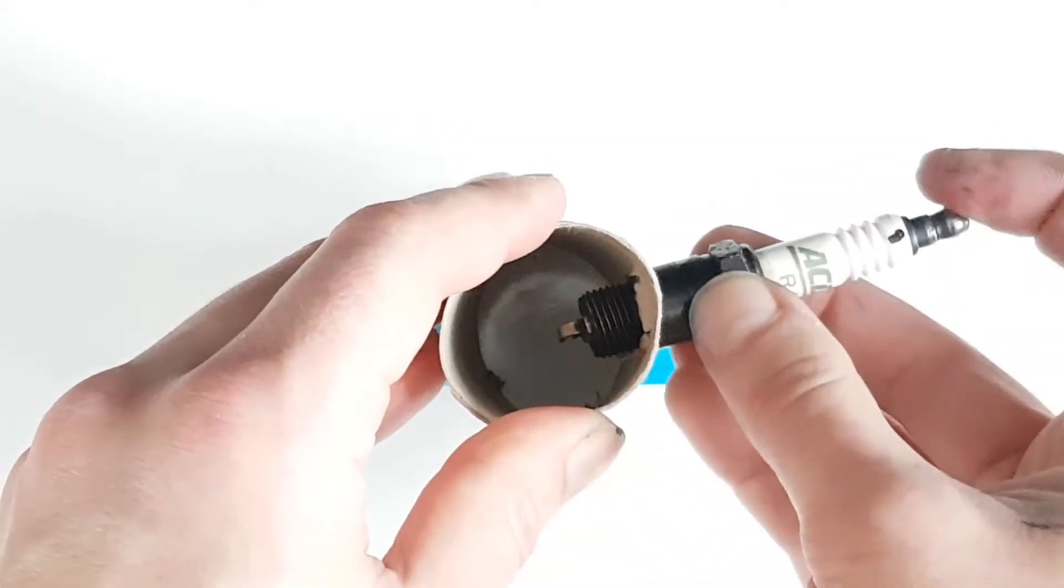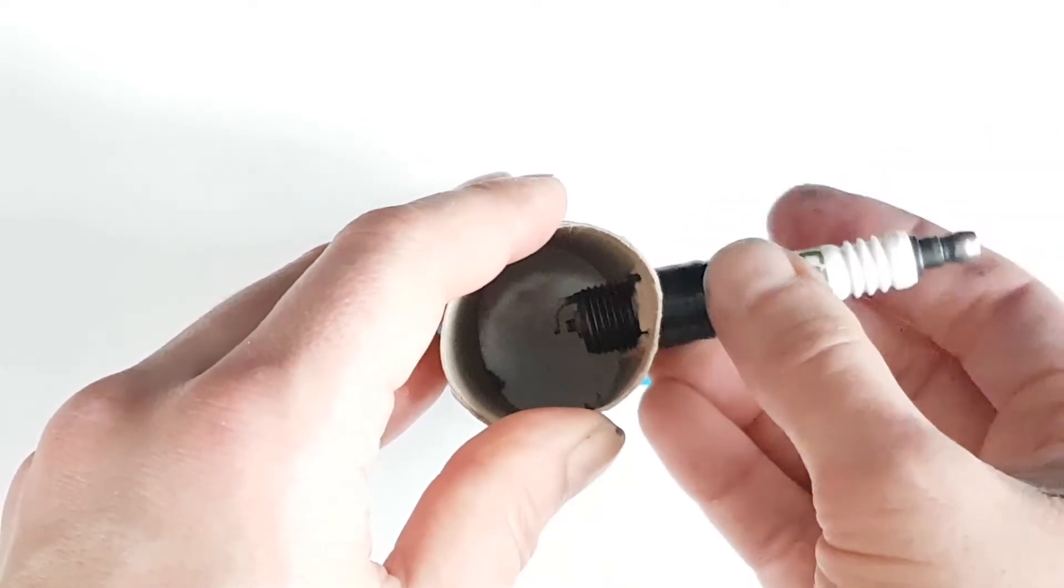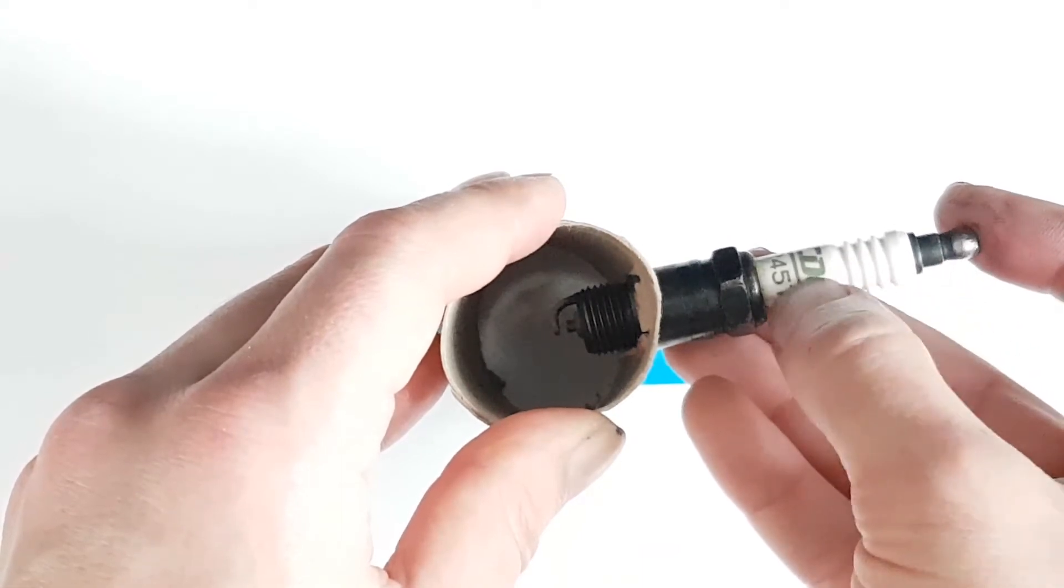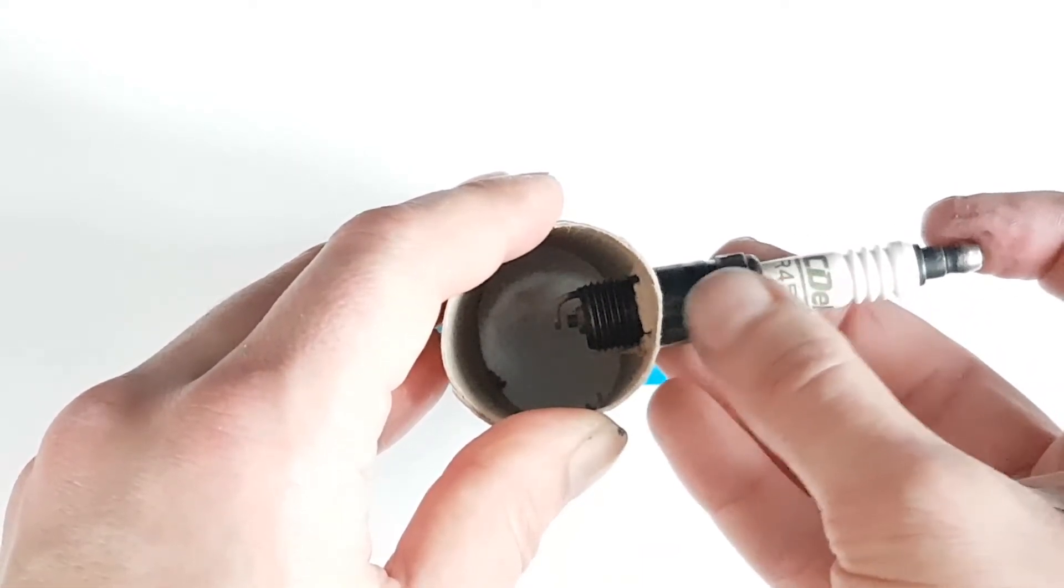So what we can do is have one mark here say in black and another mark here say in red. That way we can line up all of our spark plugs the same and we'll know they'll all be sat like this.